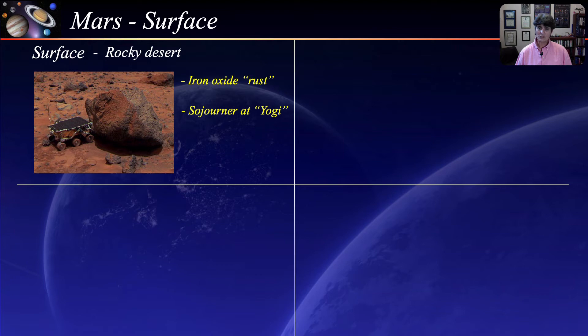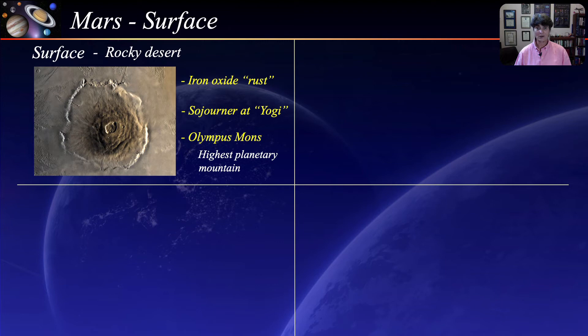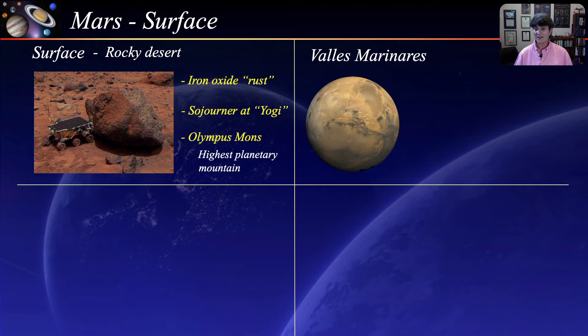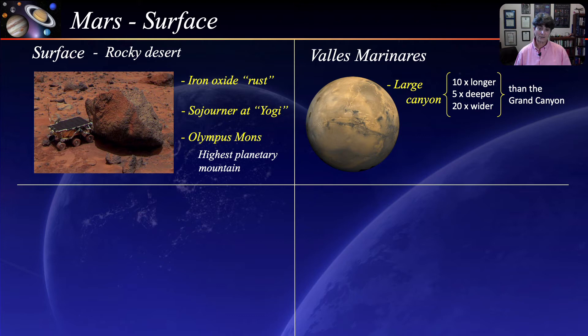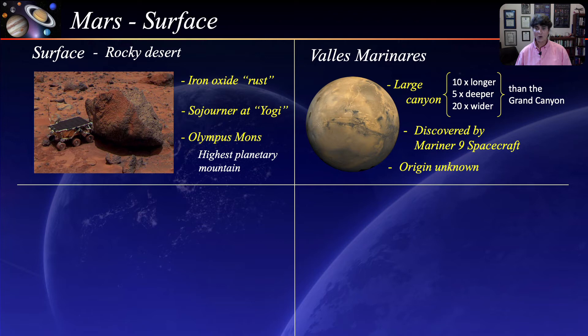A striking feature on the surface is Olympus Mons — an extinct volcano and the highest planetary mountain and second highest mountain in the solar system. It is two and a half times as high as Mount Everest and as wide as Colorado. Another striking feature is the Valles Marineris or Mariner Valley, one of the largest canyons in the solar system — ten times longer, five times deeper, and twenty times wider than the Grand Canyon. It was discovered on a flyby by the Mariner 9 spacecraft in the early 70s, and its origin is unknown, although a leading hypothesis holds that it started as a crack billions of years ago as the planet cooled.